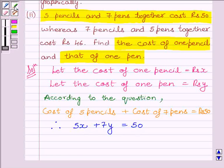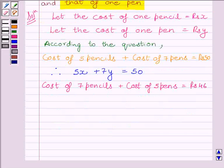The other condition given in the question is, 7 pencils and 5 pens together cost Rs. 46. Therefore, we have the equation 7X plus 5Y is equal to Rs. 46.